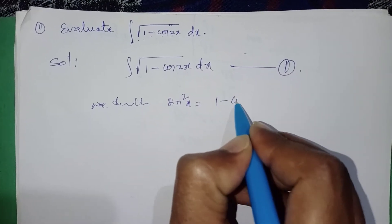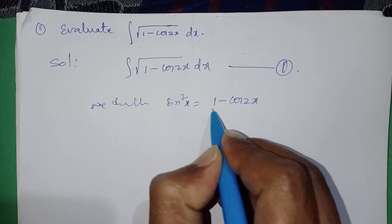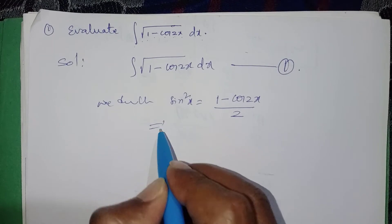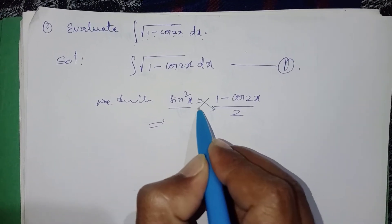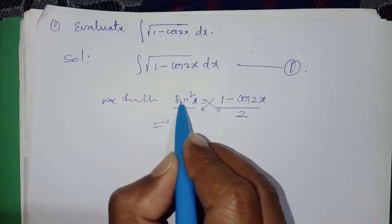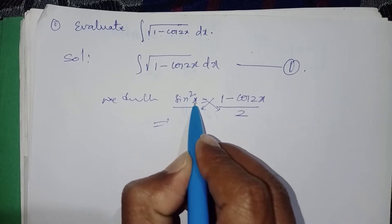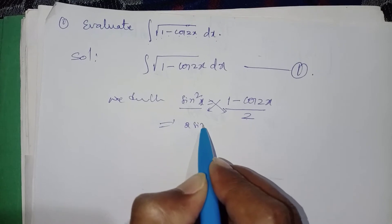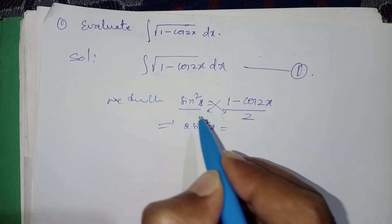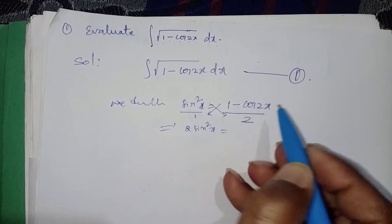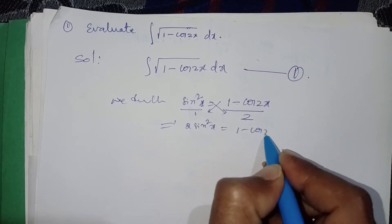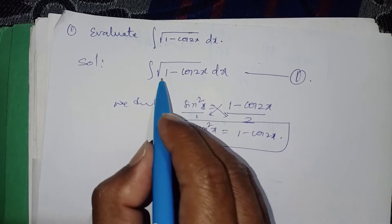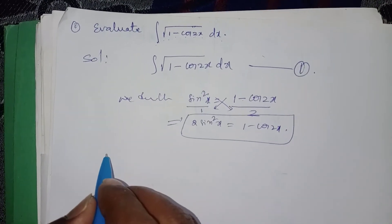We know that sin²x = (1 - cos2x) / 2. By cross multiplication, 2sin²x is equal to 1 - cos2x.